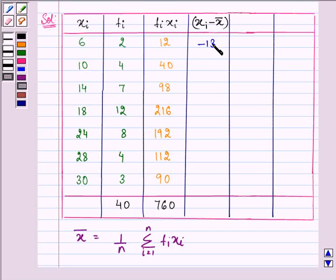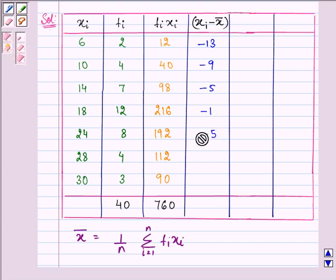So now we will be subtracting 19 from each xi. So it will be 6 minus 19 giving us minus 13, 10 minus 19 giving us minus 9 and so on. And on subtracting 19 from each and every xi we have the following results.